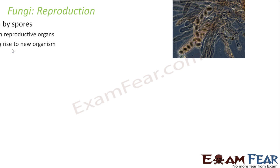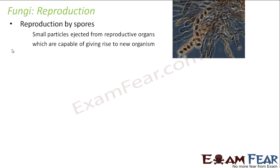How do fungi reproduce? They can reproduce both asexually and sexually. Let us first talk about asexual reproduction. One of the ways is reproduction by spores. These are small particles produced by the reproductive organs — you can imagine spores as seeds of a plant. These small particles are ejected from the reproductive organs and carried over distances through air, wind, or animals, and they give rise to a new organism.